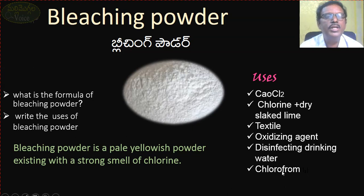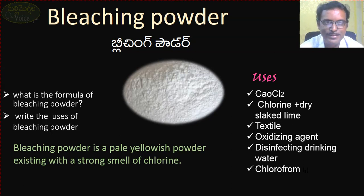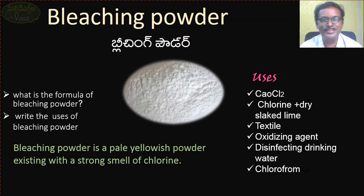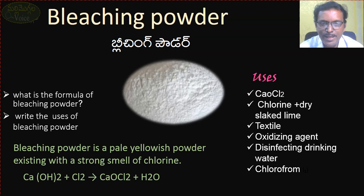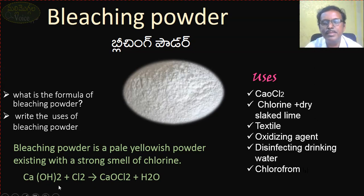Bleaching powder is used for disinfecting drinking water — to kill germs in drinking water. It is also used in the production of chloroform, which is used during surgical operations. Preparation: calcium hydroxide plus chlorine gas gives bleaching powder.